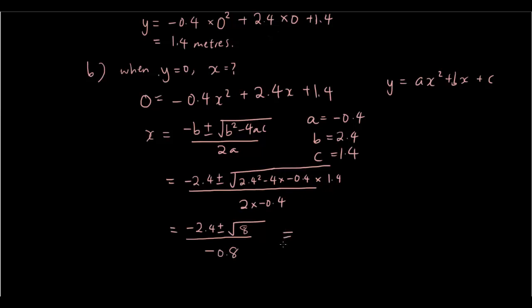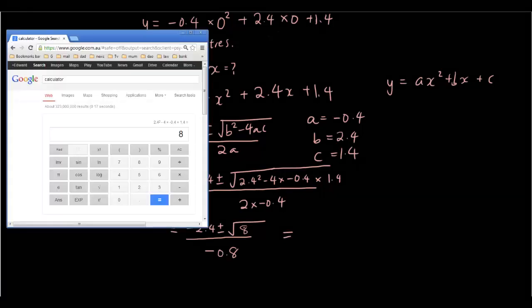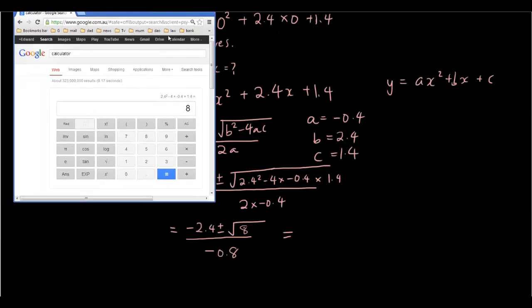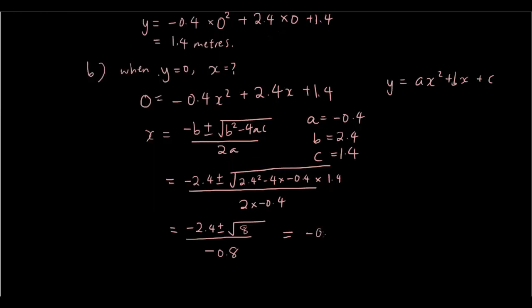So putting that in the calculator we have negative 2.4 plus the square root of 8 divided by negative 0.8. So we have negative 0.3 which is the first x-intercept.